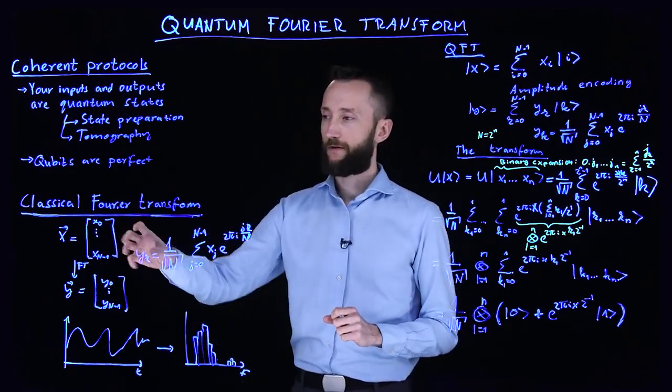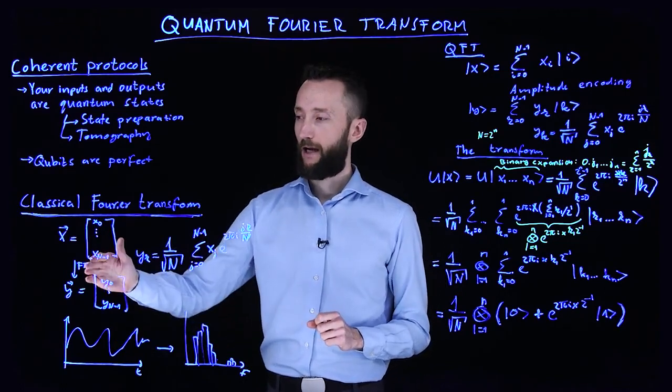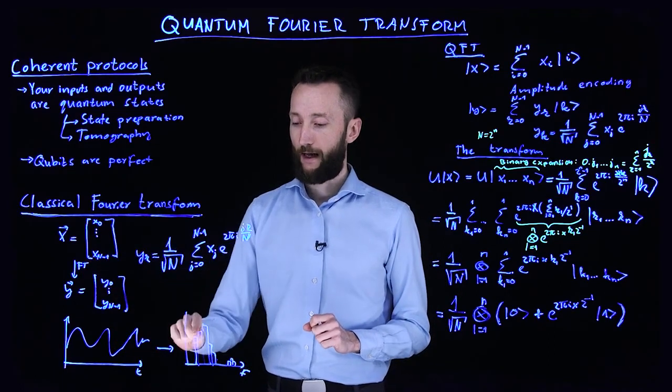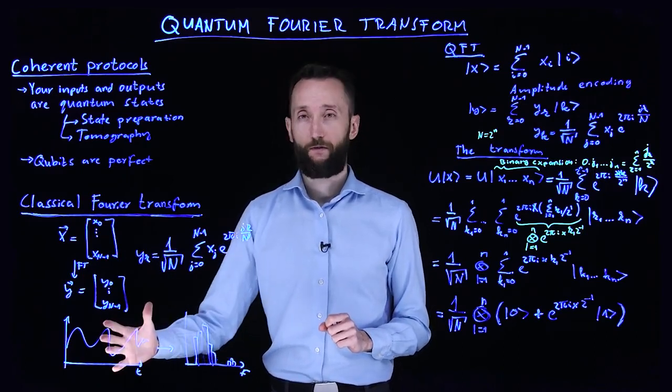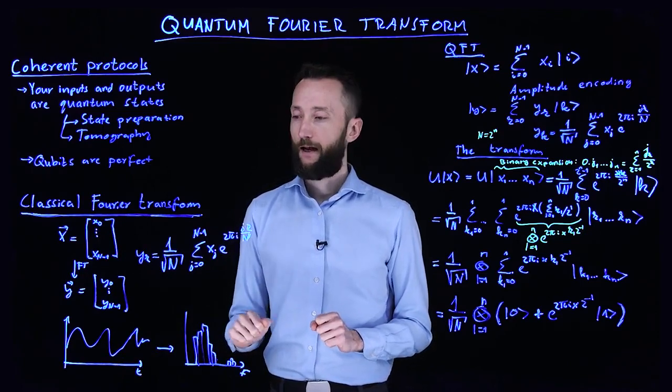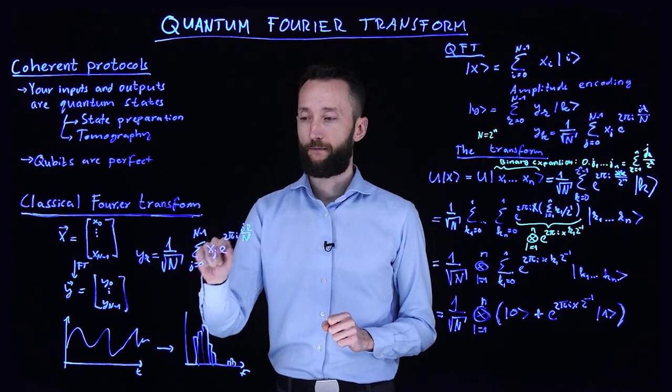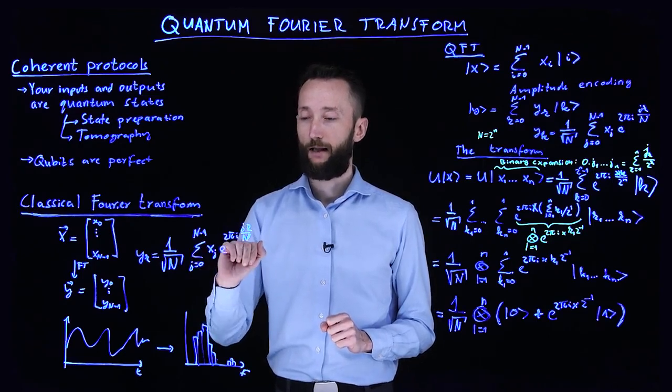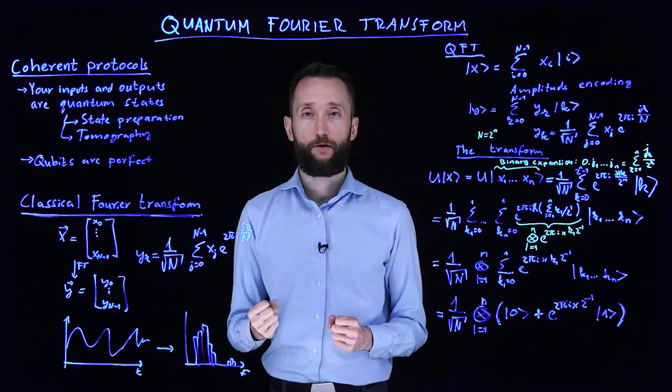So classically, we have some vector which, for instance, describes a time series. And by applying Fourier transformation on it, we get the frequency domain decomposition of the signal. So you go from the time domain to the frequency domain. And the way you do it is by applying this exponential operation for every single element on x_j. And this reveals the frequency structure.